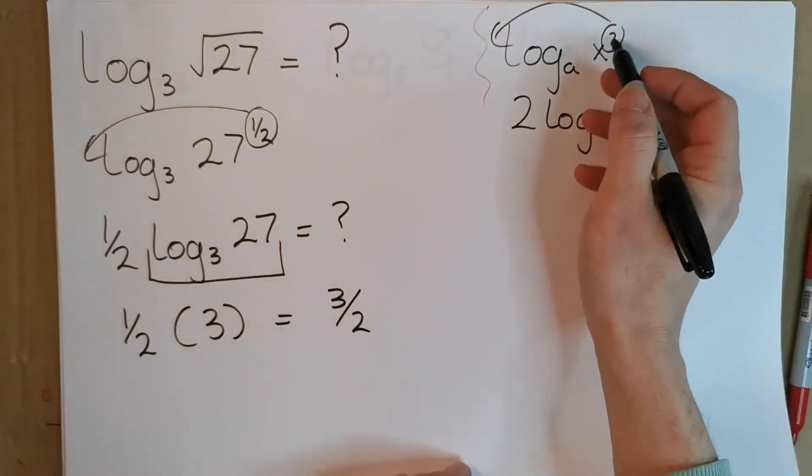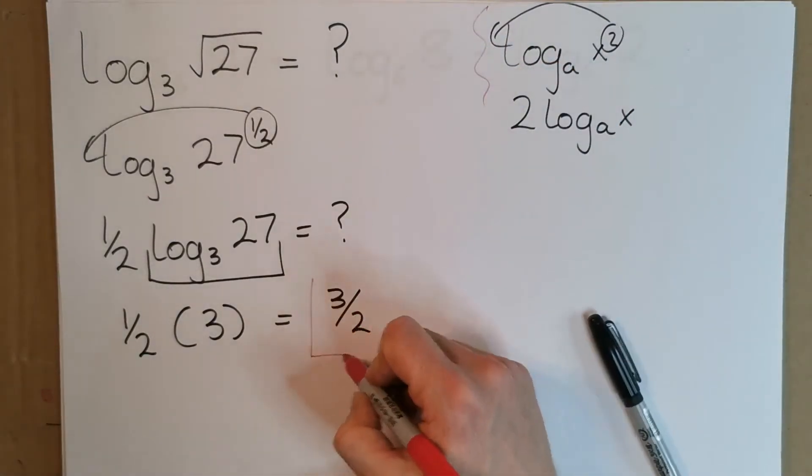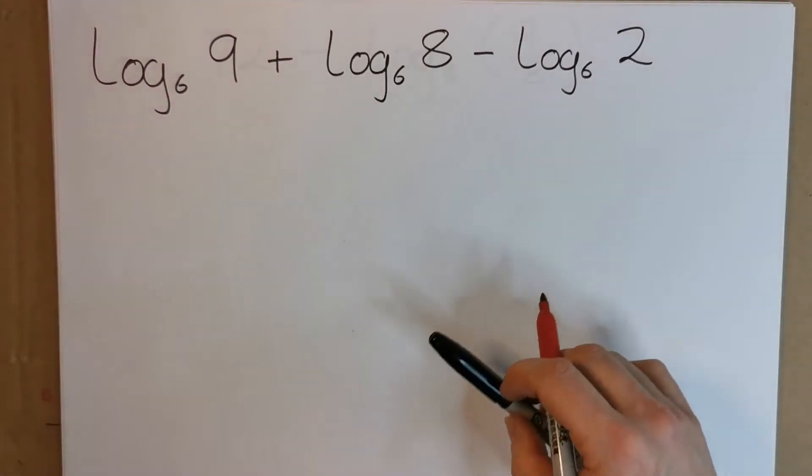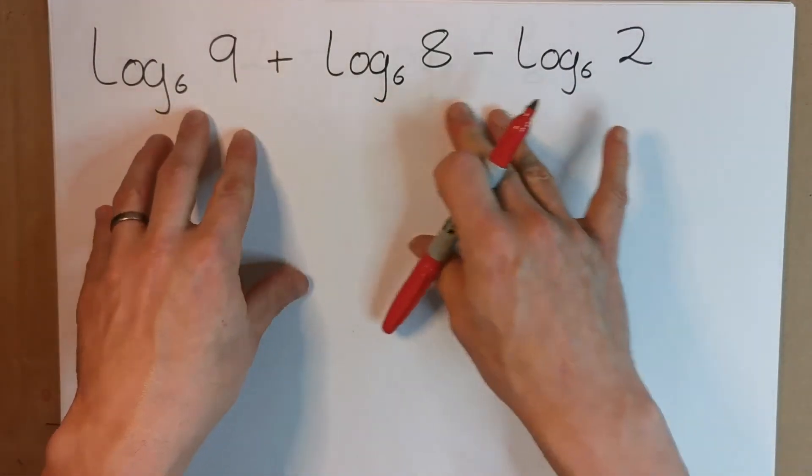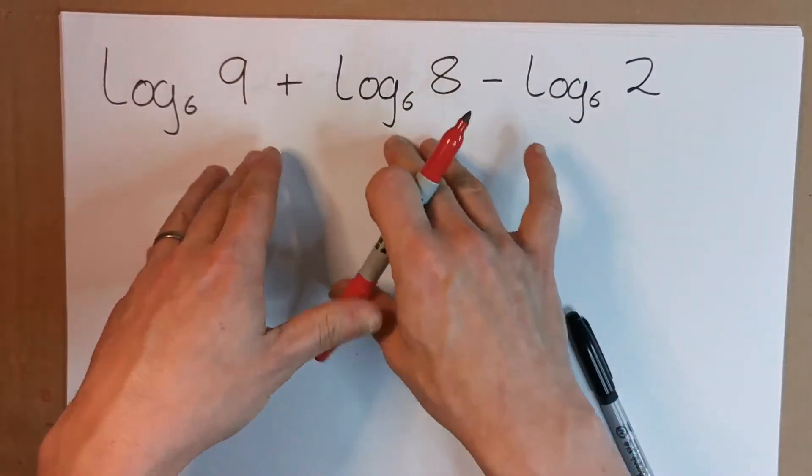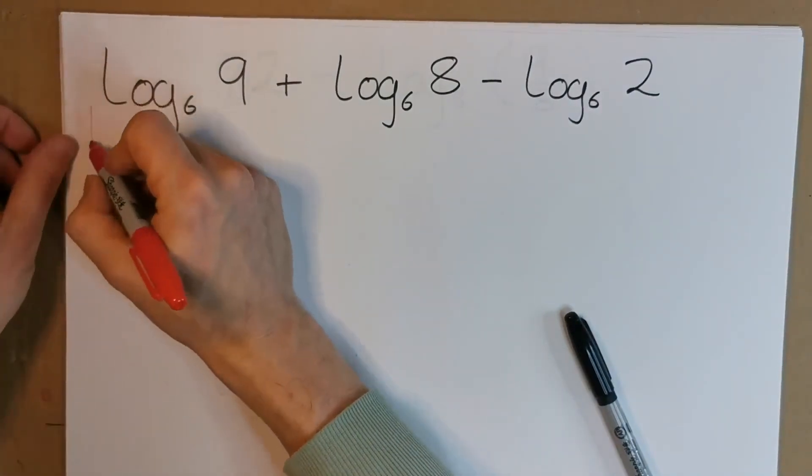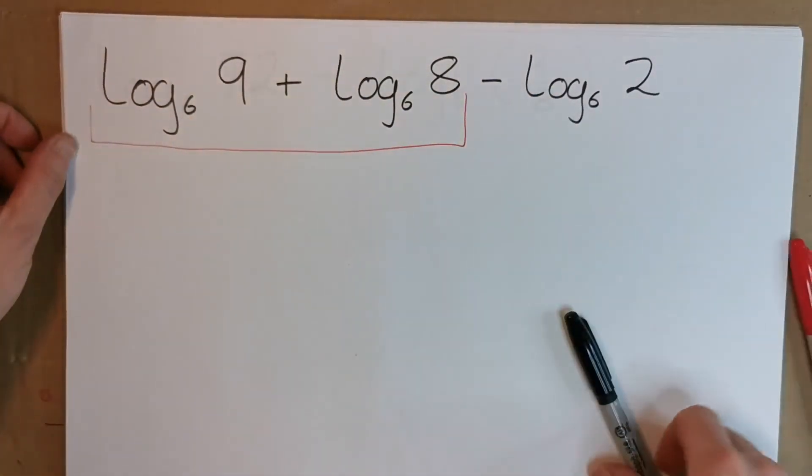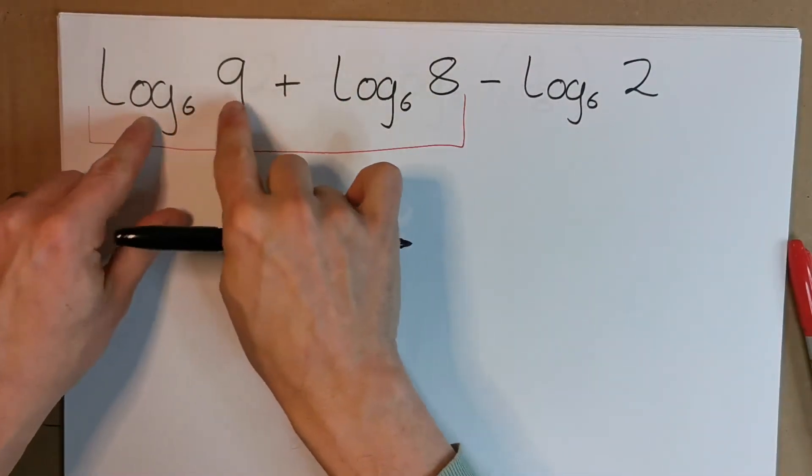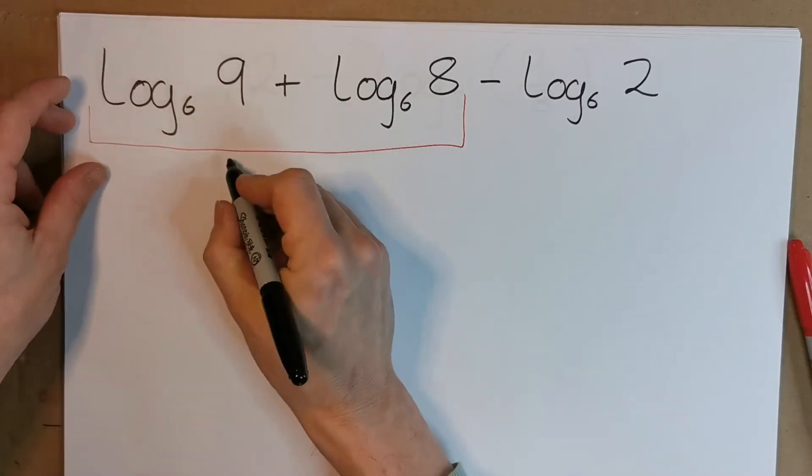Hopefully that made sense, we just use this rule where we can bring the power down to the front. Now let's look at another one. We have a composition of a couple of different things and a couple different rules together. I'm going to deal with the first two first. 9 times 8, because when you have an addition between two logs of the same base 6, we can actually bring that together as the log base 6 of 9 times 8.